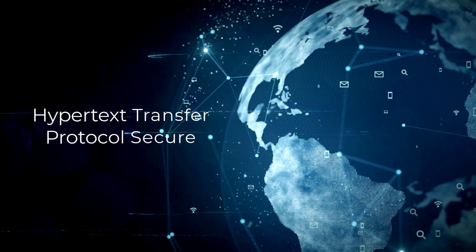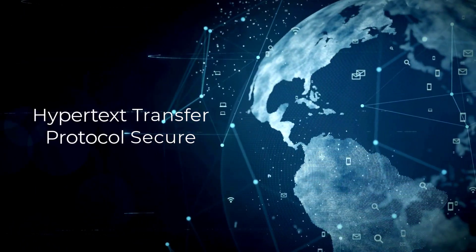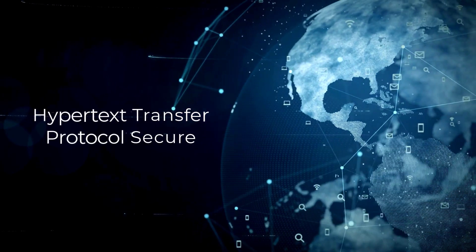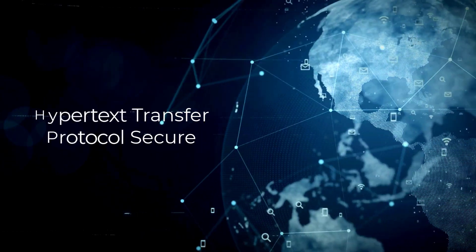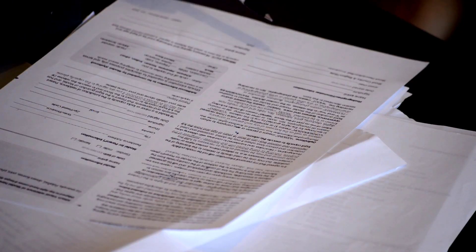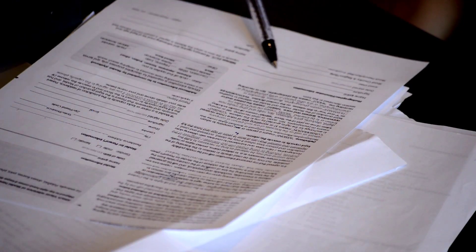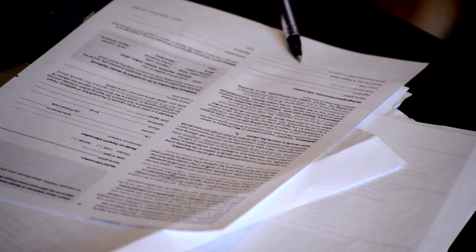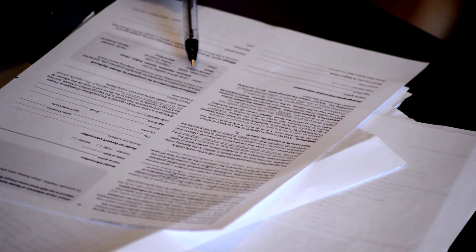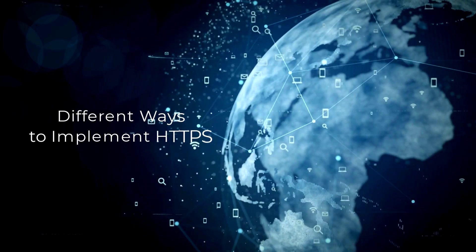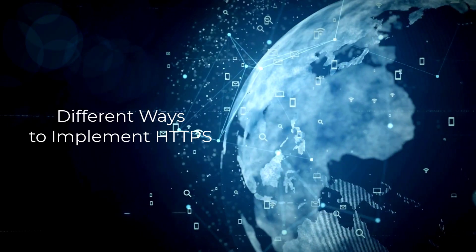HTTPS, or Hypertext Transfer Protocol Secure, is the standard protocol for securely transmitting data over the internet. It relies on a series of steps to establish a secure connection, encrypt data, transmit it, and finally close the connection. Now let's look at different ways to implement HTTPS.